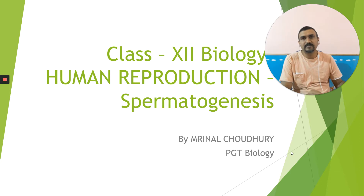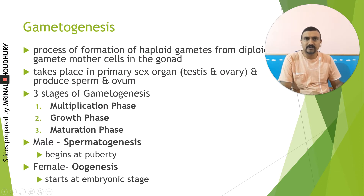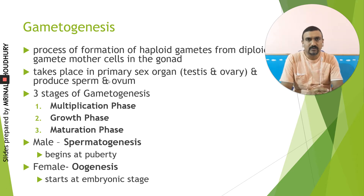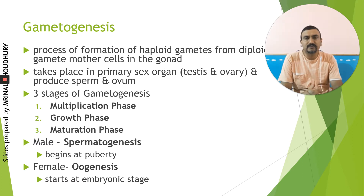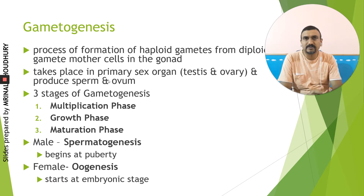Gametogenesis is simply the formation of gametes. In case of males it is called spermatogenesis, and in case of females we call it oogenesis — that is sperm formation and ovum formation in males and females respectively. Gametogenesis is basically a process of formation of haploid gametes from the gamete mother cells, which are the diploid meiocytes. This process takes place specifically in the gonads, that is in the testes in males and ovaries in females.